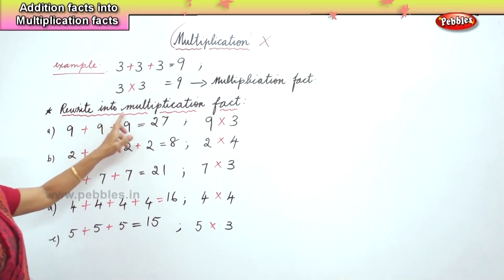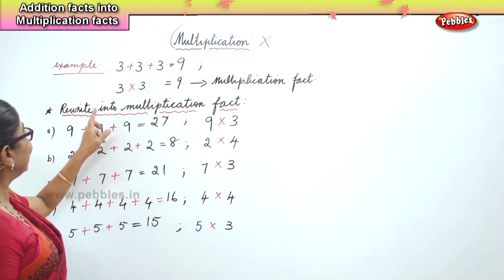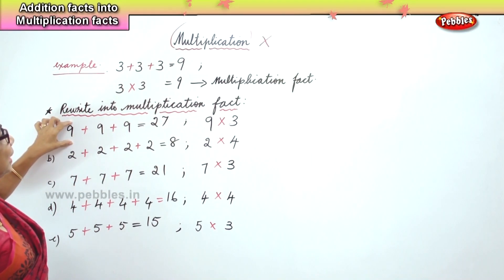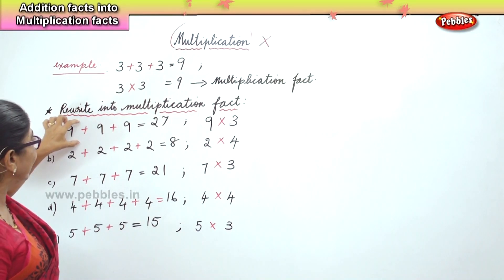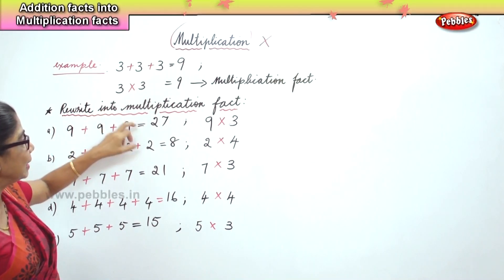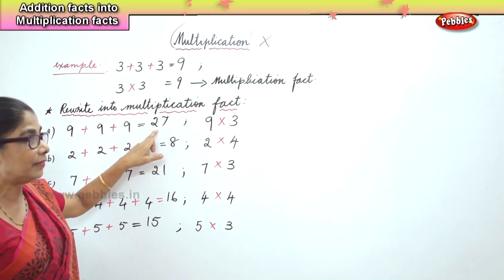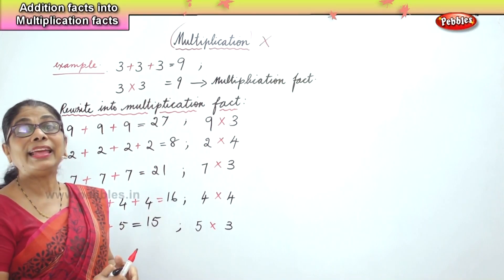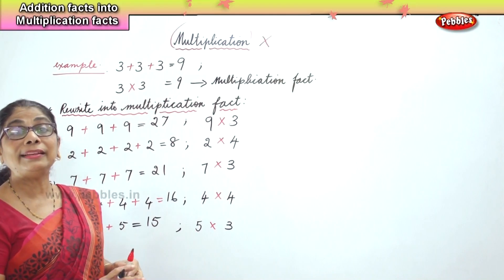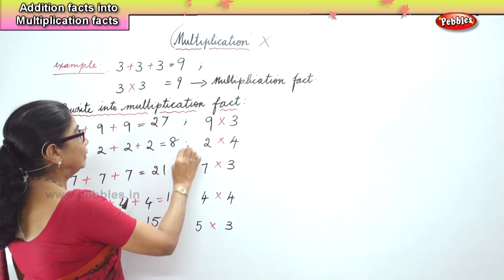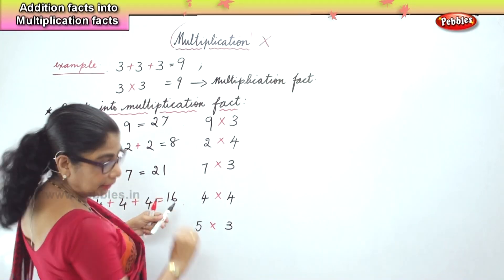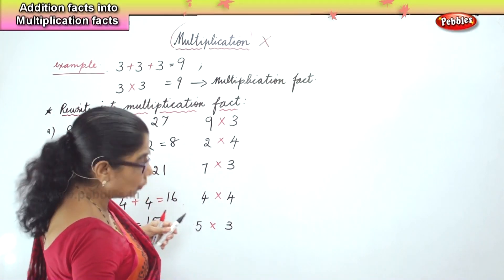Rewrite into multiplication fact. We have addition — multiplication is nothing but repeated addition. 9 plus 9 plus 9 is 27. How do you write the multiplication fact? 9 into 3 — 9 threes are 27. So the addition and the multiplication fact both equal that.